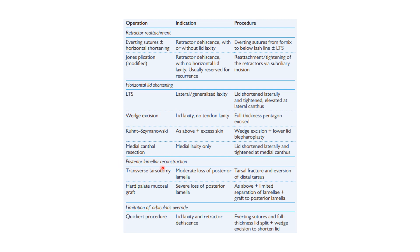The next type of procedures are posterior lamella reconstruction procedures, usually done for cases of cicatricial entropion. First is transverse tarsotomy, indicated in moderate loss of posterior lamella — tarsal fracture and eversion of distal tarsus. Next is hard palate mucosal graft, indicated in severe loss of posterior lamella — tarsal fracture plus eversion of distal tarsus plus limited separation of lamellae plus graft to posterior lamella. The next procedure is limitation of orbicularis override — indicated in lid laxity and retractor dehiscence, involving averting sutures and full thickness lid split plus wedge excision to shorten the lid.